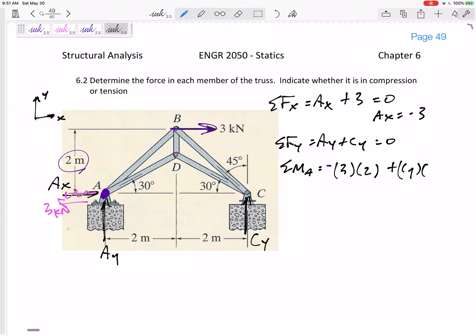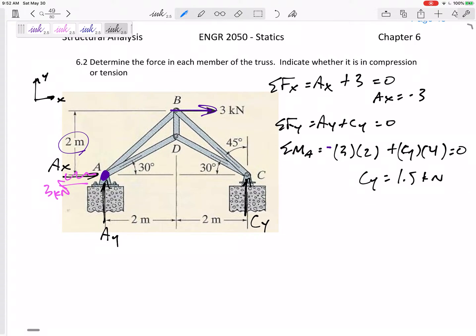So negative 3 times 2. But then CY is acting 4 away, creating a positive moment. So that equation allows me to solve for CY. CY is 1.5 kilonewtons right there, positive, so I guessed correctly, which could only be up. And so if that is positive 1.5, AY negative 1.5. So this is down 1.5, this is up 1.5.